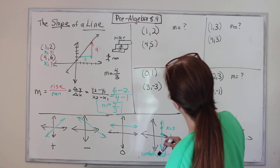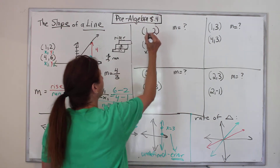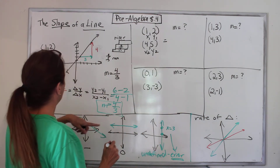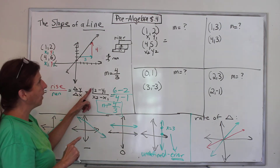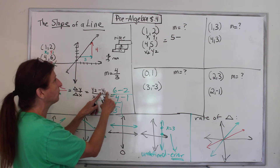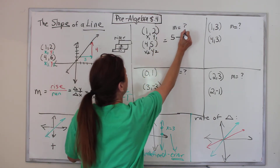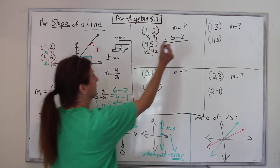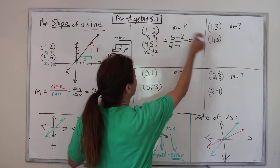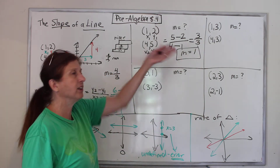Let's try some problems. Step one: write down X, Y, X, Y. Step two: which X is less? One is less than four, so those are the 1s and those are the 2s. Step three: fill in the formula. Find Y2 and write it down. Write the subtract symbol — always write your subtract symbol before finding Y1, because if it's negative you'll drop it and get the wrong answer. Y1 is 2. Draw the dividing line. X2 is 4. Write the subtraction. X1 is 1. Do the math: 5 minus 2 is 3, 4 minus 1 is 3, and 3 divided by 3 is 1. Slope equals 1.